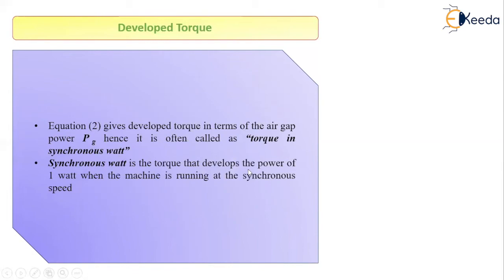Now let us see what is a synchronous watt. A synchronous watt is the torque which develops the power of 1 watt when the machine is running at synchronous speed. So, if we assume our machine is rotating at synchronous speed — noting that an induction machine never actually runs at synchronous speed — but if we assume it does, then this torque would develop the power of 1 watt. That is nothing but a synchronous watt. In this way, we have derived the formula for developed torque.